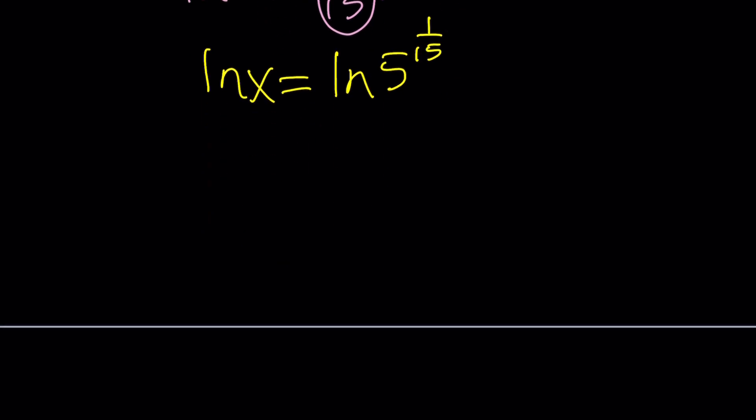Now, if you do e to the power of both sides, that's going to give you e to the power ln x equals e to the power ln 5 to the power 1 over 15. And from here, you're going to get x equals ln. And I mean, wait a minute. E to the power of ln x. Okay. E to the power of ln x is x.